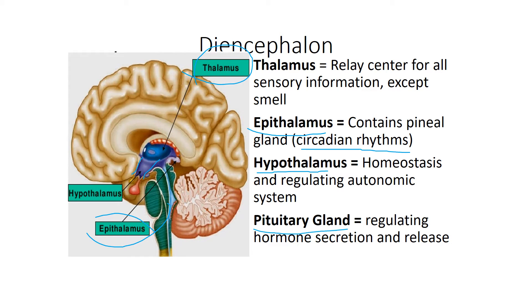Lastly, the pituitary gland is where we have production of different hormones as well, and they are influenced by the hypothalamus. This is considered to be the control of the endocrine system, and it controls hormone secretions that regulate through our bloodstream.